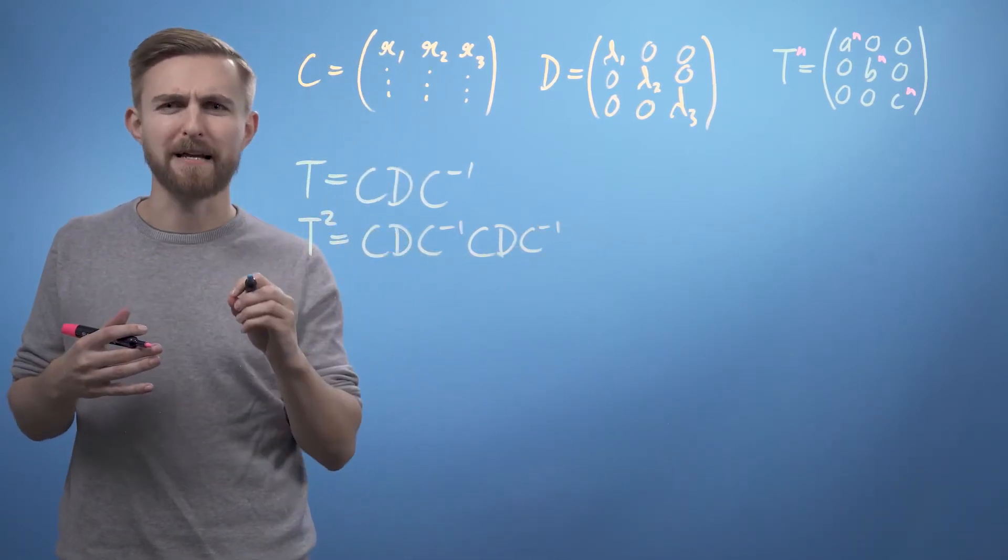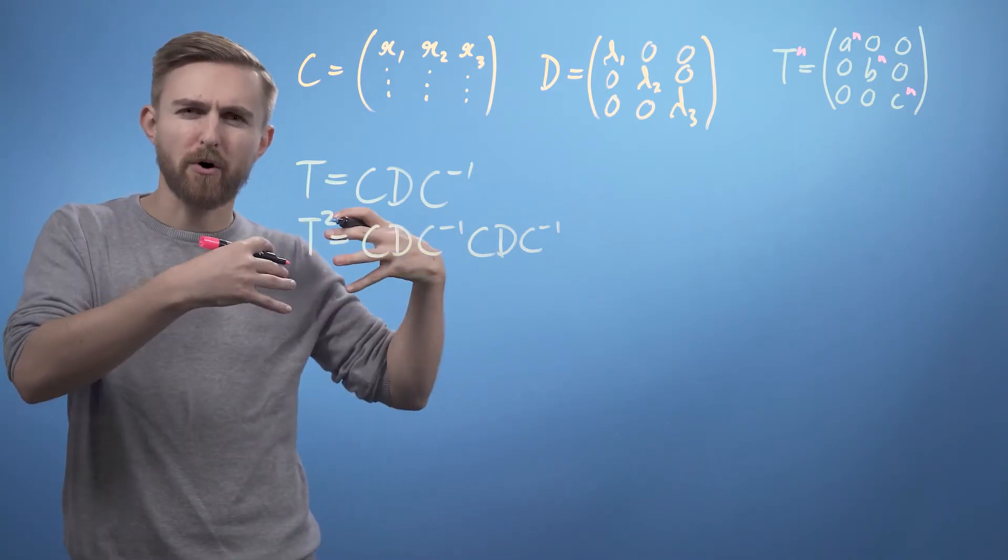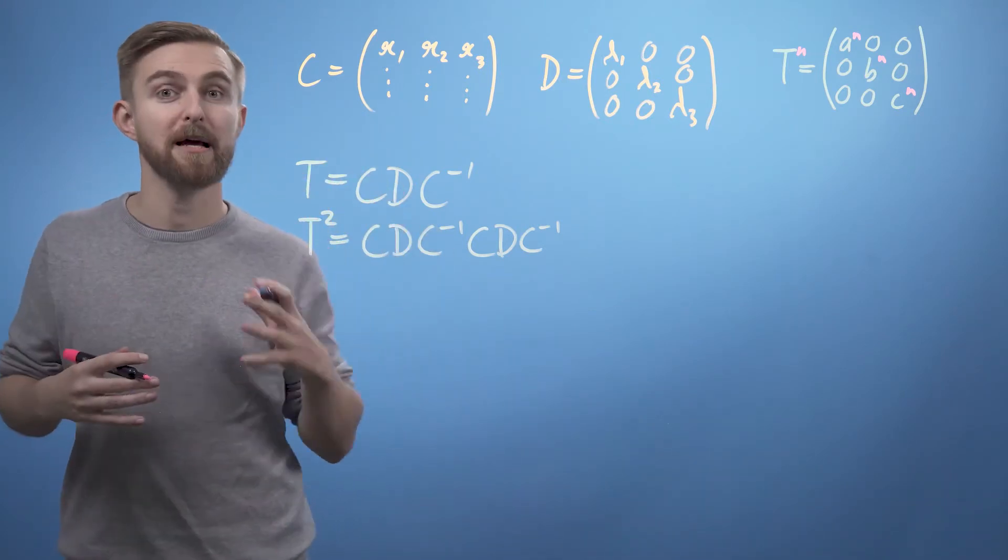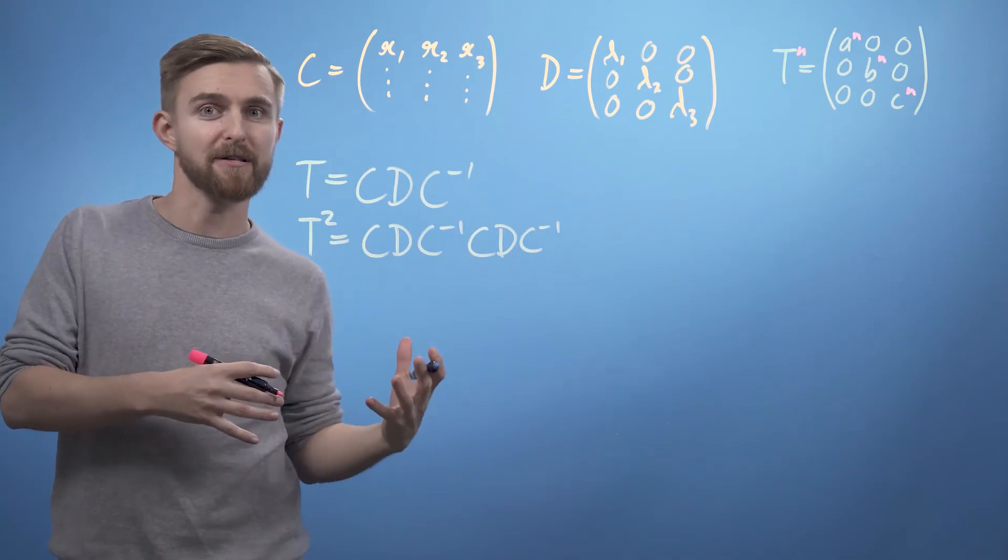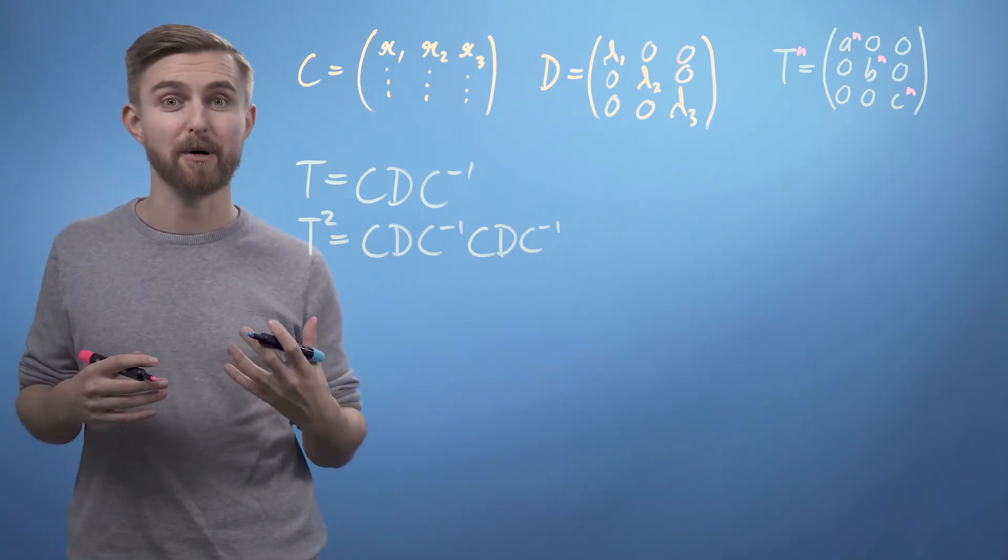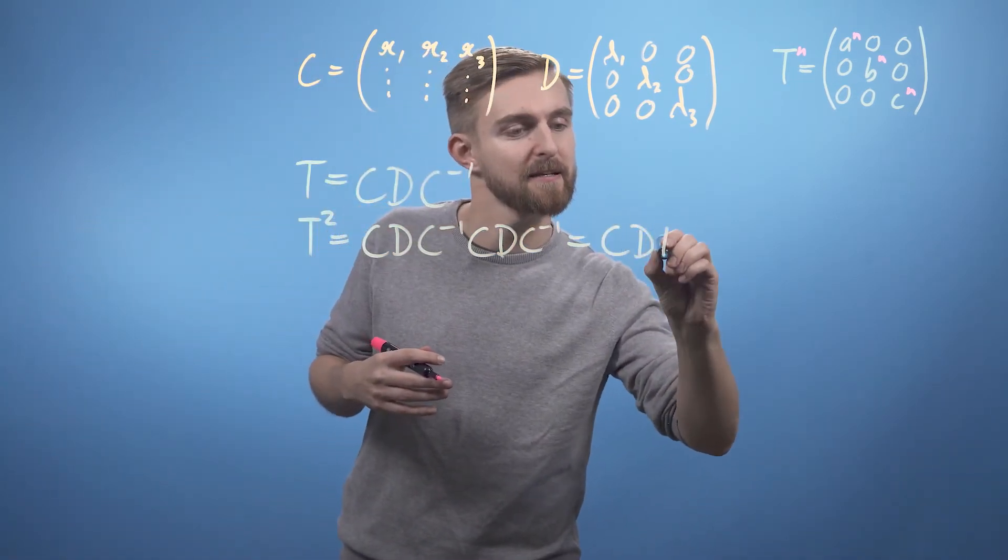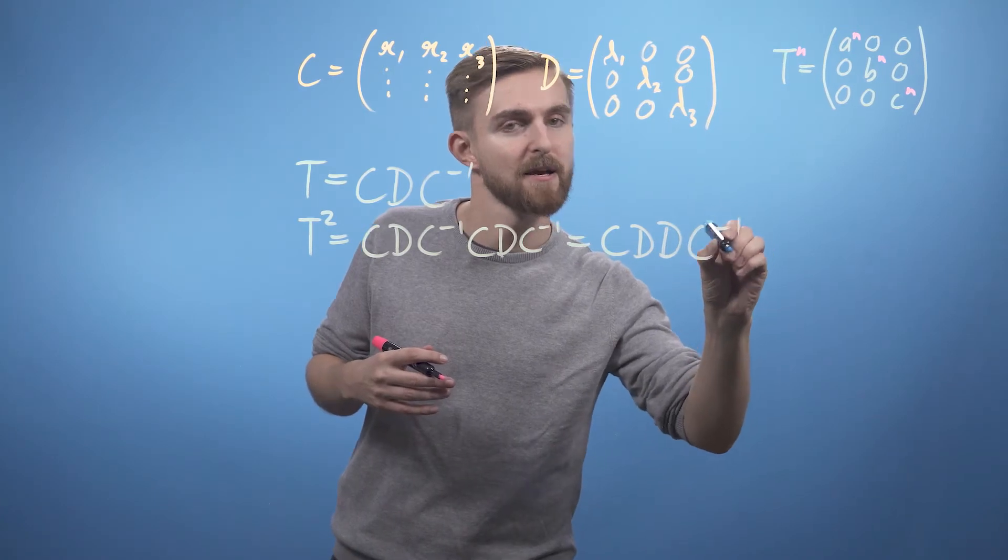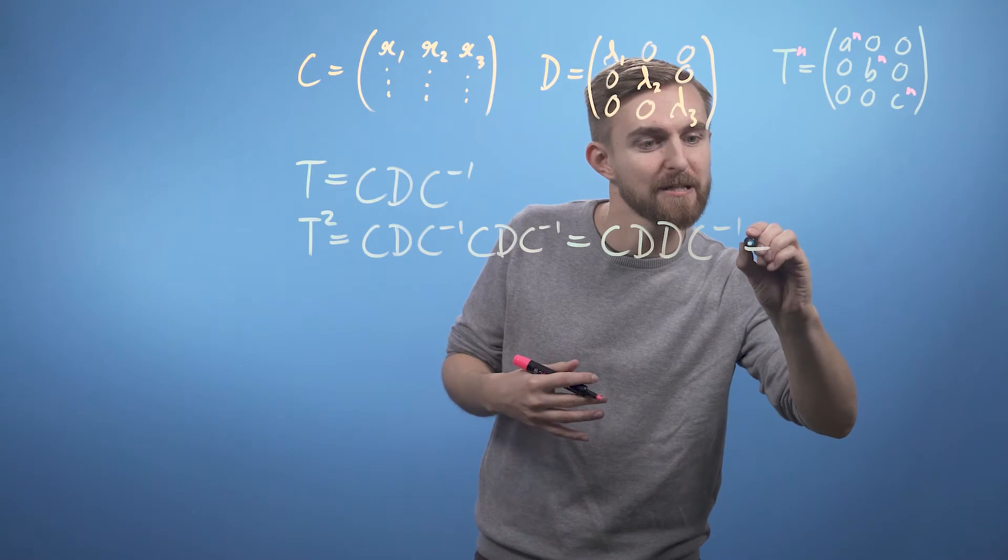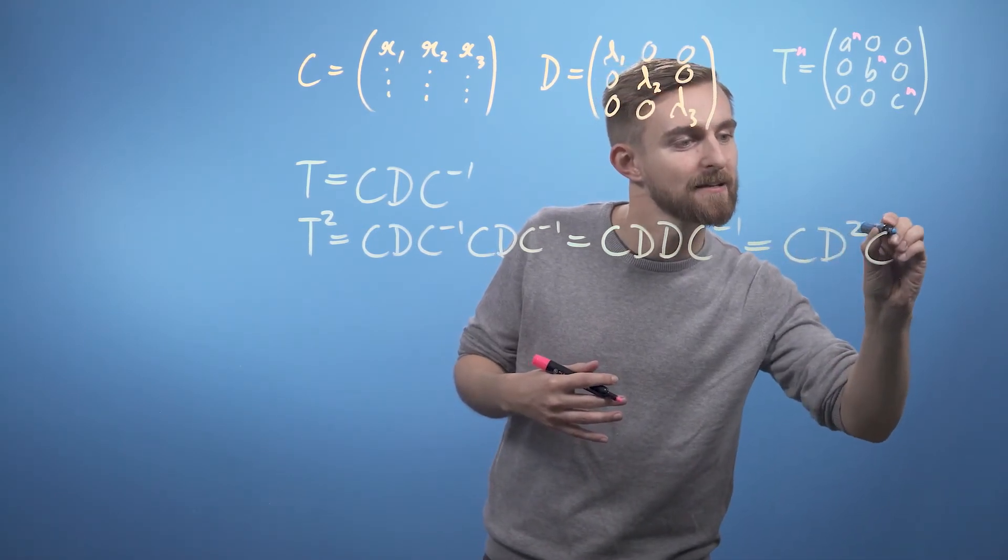So hopefully you've spotted that in the middle of our expression, on the right hand side, you've got C multiplied by C inverse. But multiplying a matrix and then by its inverse is just the same as doing nothing at all. So we can simply remove this operation, equals C D D C inverse. And then we can finish this expression by saying, well, this must be C D squared C inverse.